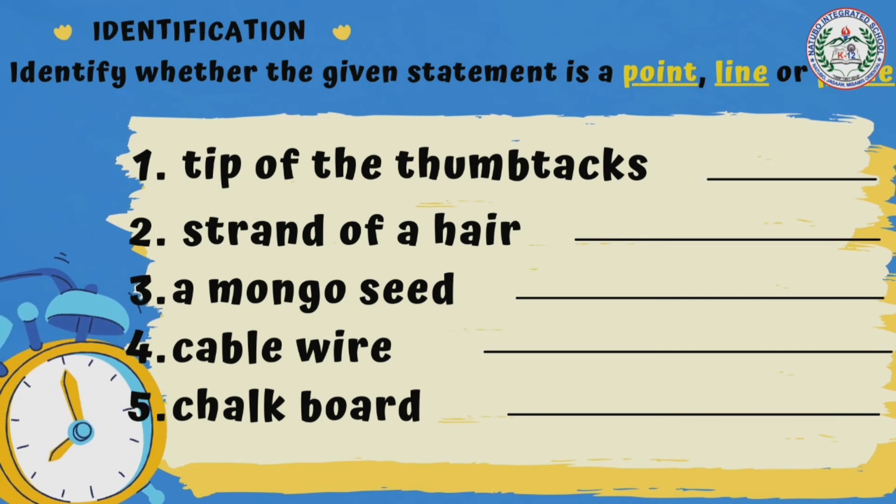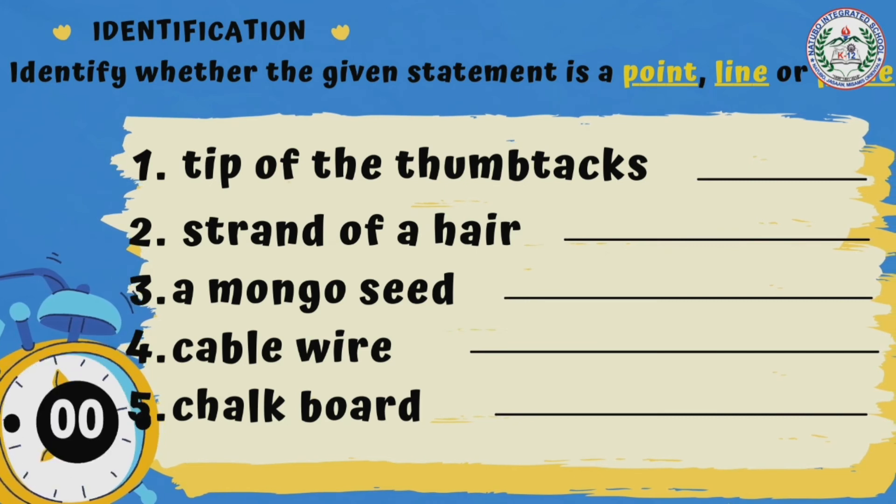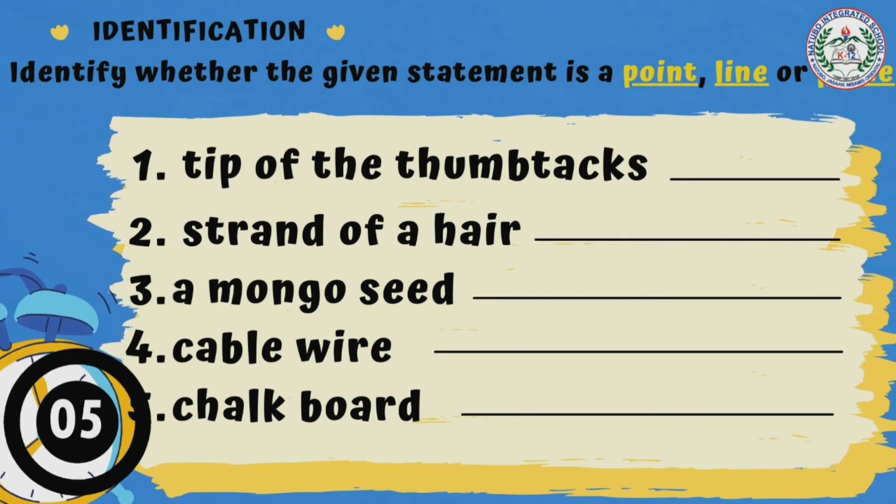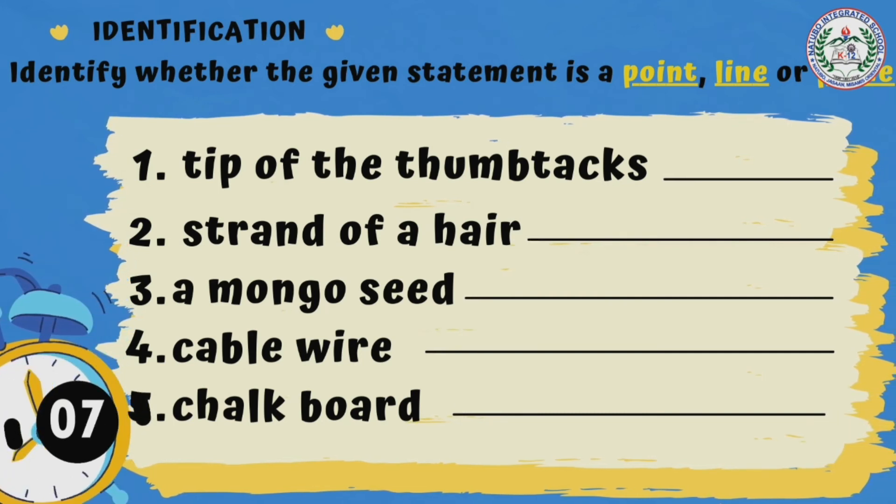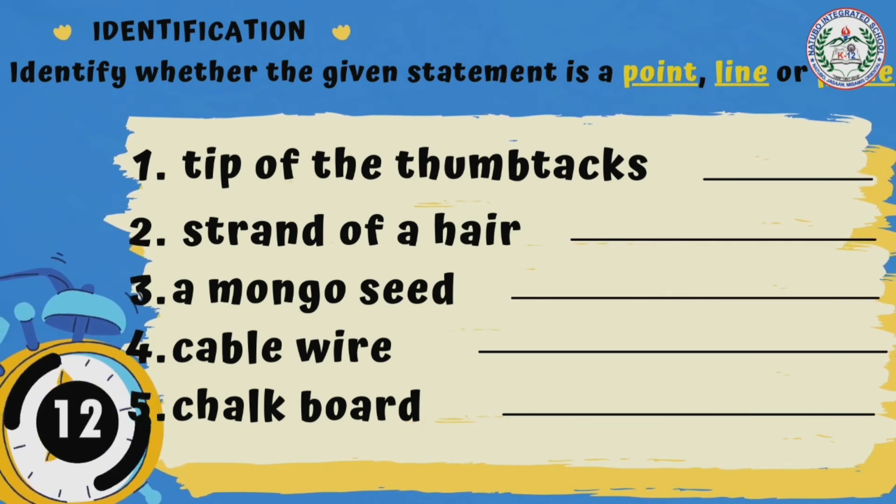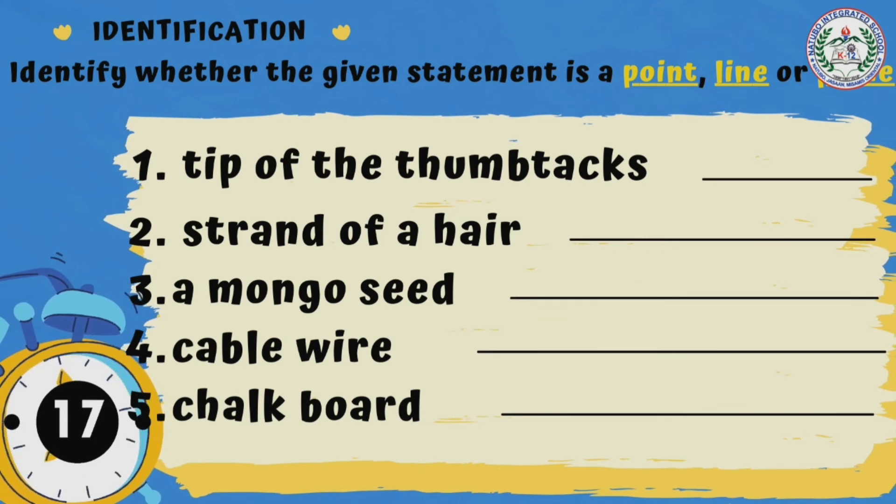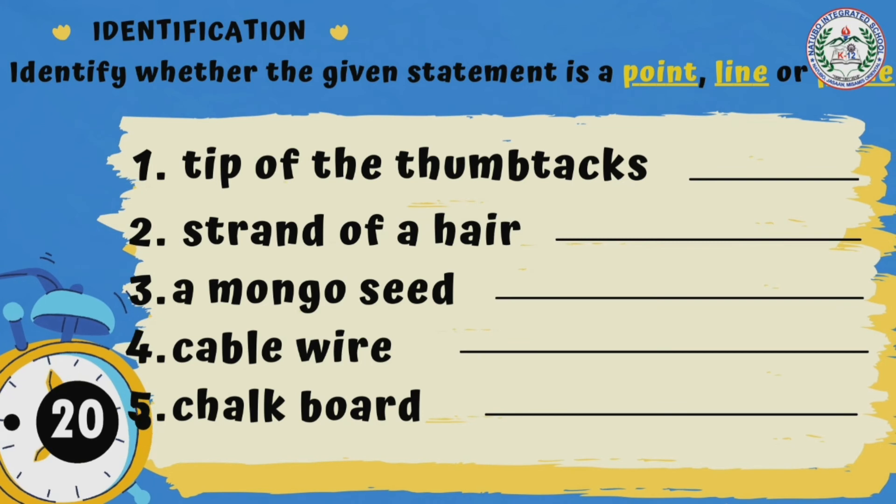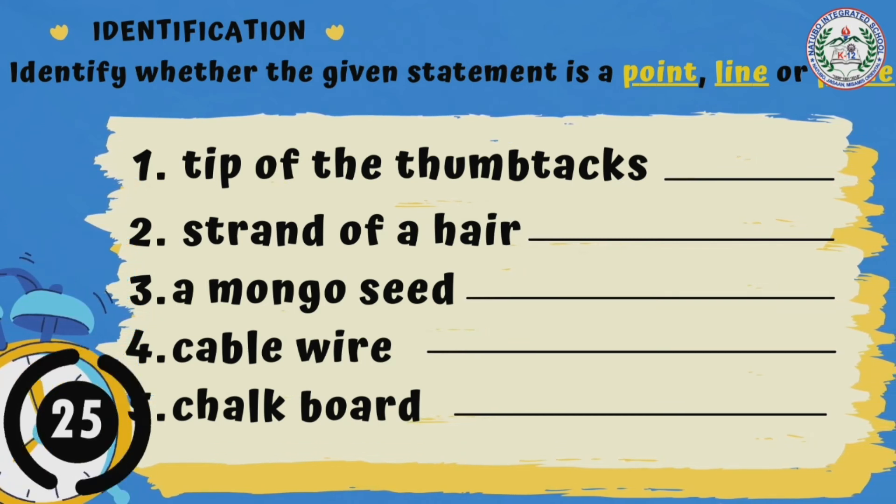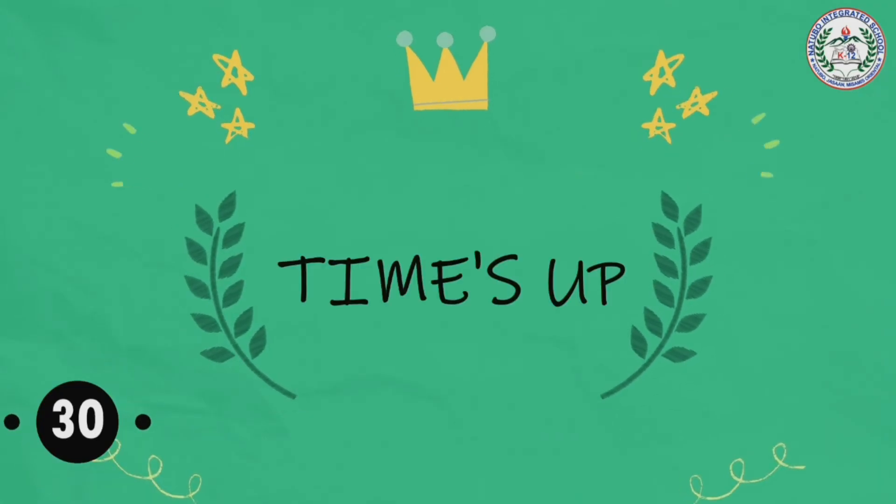Number 1, tip of the thumbtacks. Number 2, strand of a hair. Number 3, a mungo seed. Number 4, cable wire. And number 5, chalkboard. And the time is up.